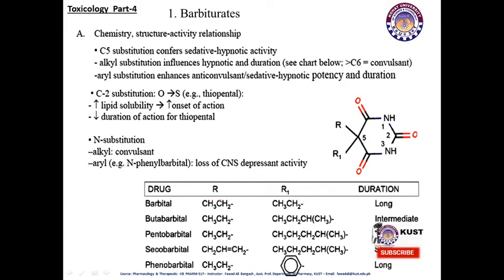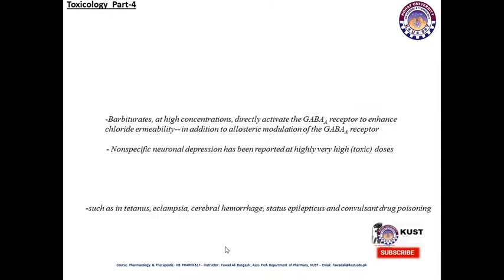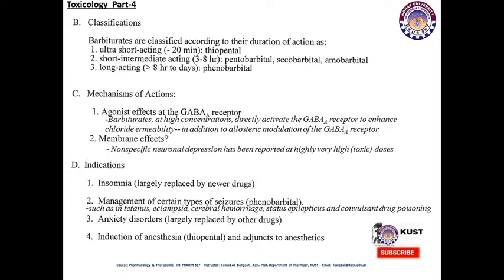Looking at R and R1 groups: barbitol has R = CH3CH2 and R1 = CH3CH2, giving long duration of action. Phenobarbitol differs at R and R1 positions, resulting in different duration. Barbiturates are classified by duration of action: ultra-short-acting (thiopental), short-acting (pentobarbitone, secobarbitone, amobarbitone). The mechanism of action of barbiturates involves an agonist effect at the GABA-A receptor. At high concentrations, barbiturates directly activate the GABA receptor to enhance chloride permeability, in addition to allosteric modification of the GABA-A receptor.